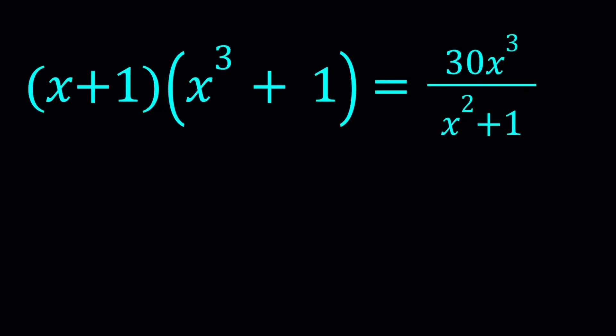Hello everyone. In this video, we're going to be solving an interesting equation from the book 500 Mathematical Challenges. It's a really nice book with a good collection of problems. I'm going to share the links down below. So we have this equation, x plus 1 times x cubed plus 1 equals 30x cubed divided by x squared plus 1. The original equation is in a polynomial form, but I just wrote it as a rational equation.